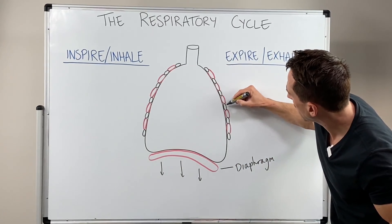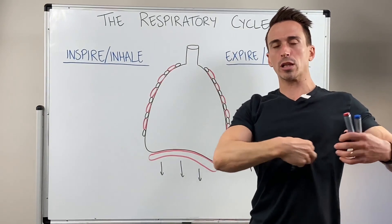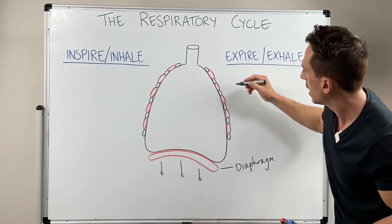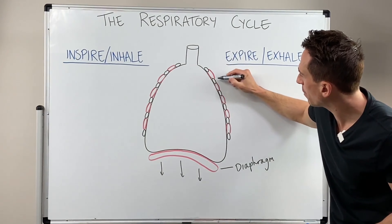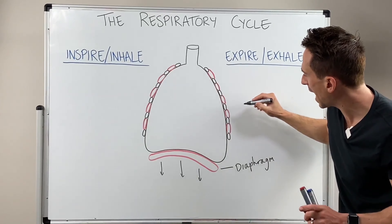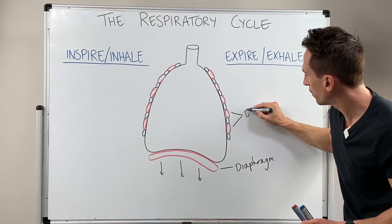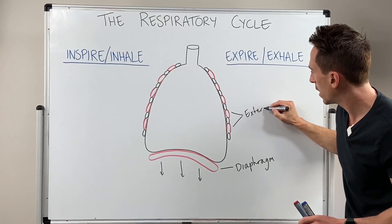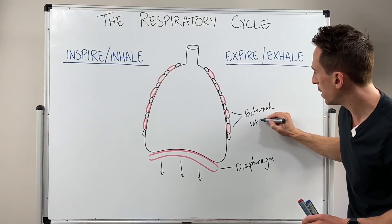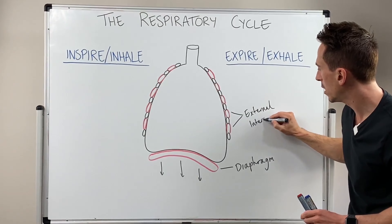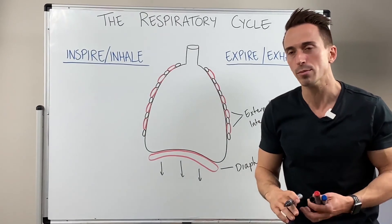Our ribs line the thoracic cavity, and we've got muscles on the outside and muscles on the inside. The muscles on the outside are called external intercostals — external because they're on the outside, inter meaning between, costals meaning cartilage, specifically ribs.